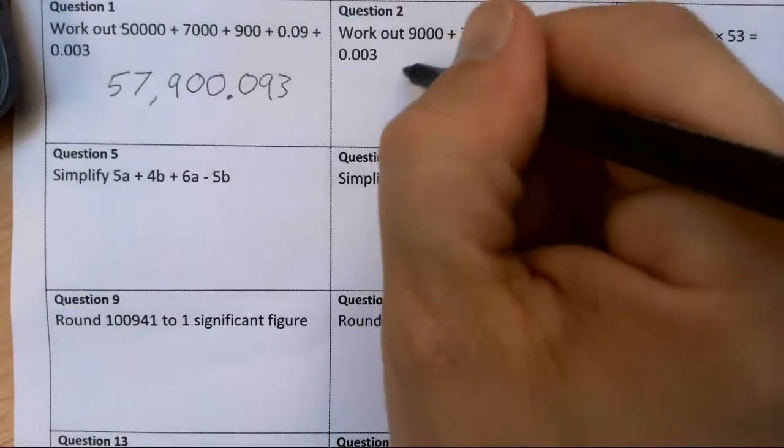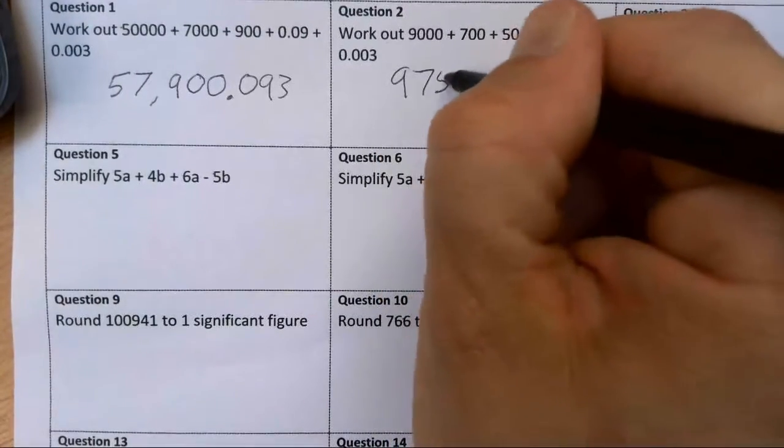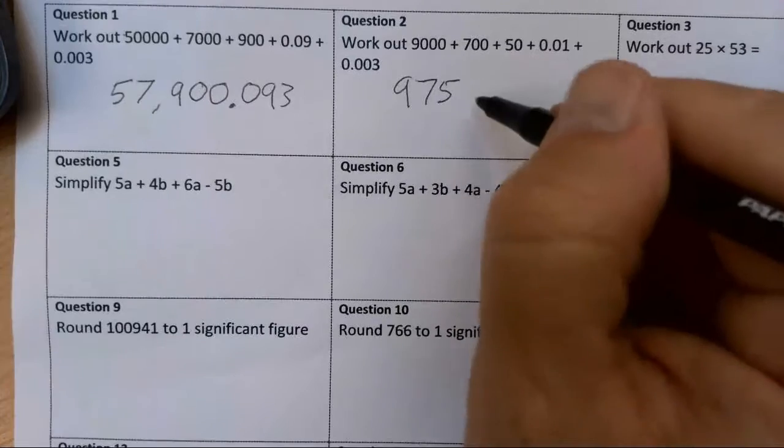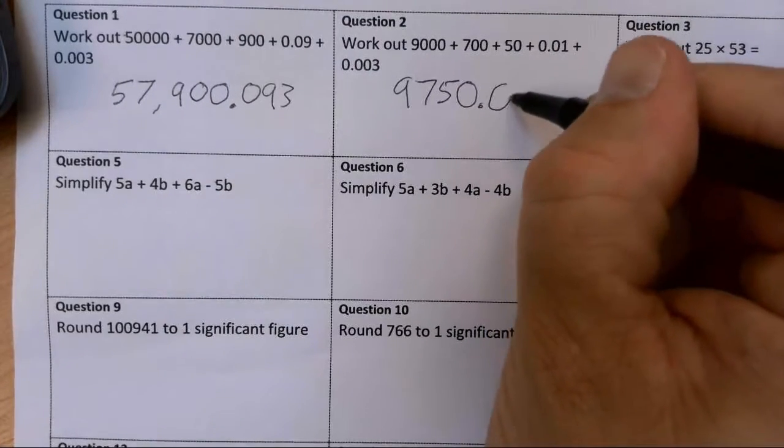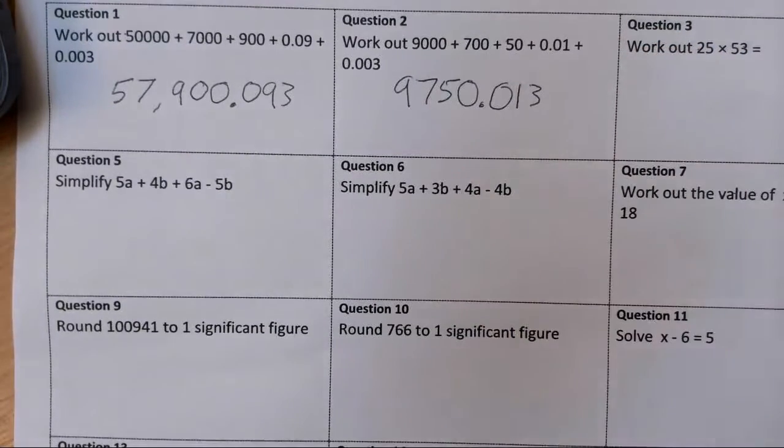This one, I've got 9,750, I've got no units, so I need a zero, it's the decimal point, I've got no tenths, I've got one hundredth and three thousandths.